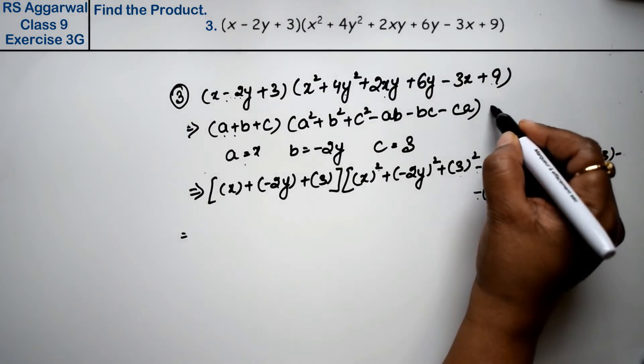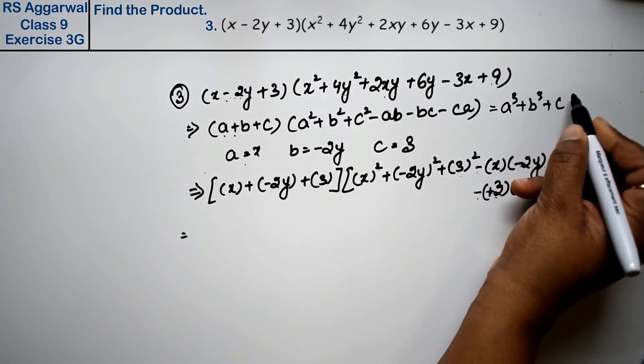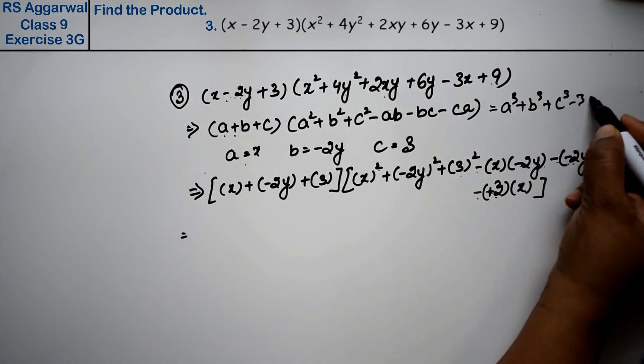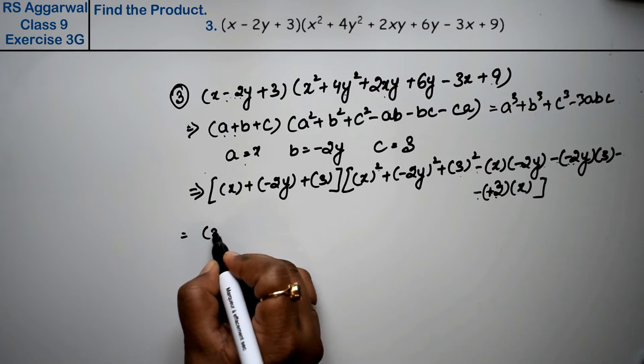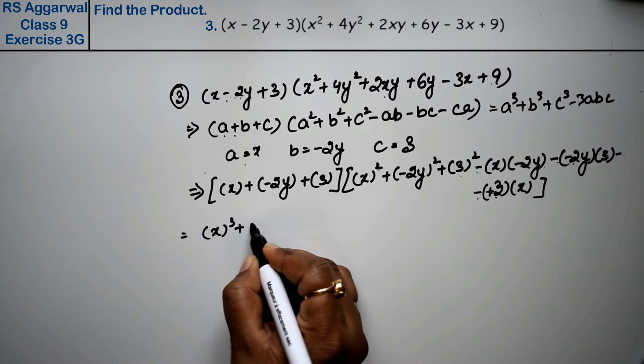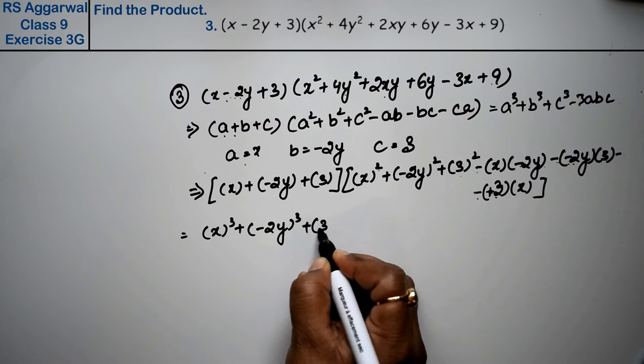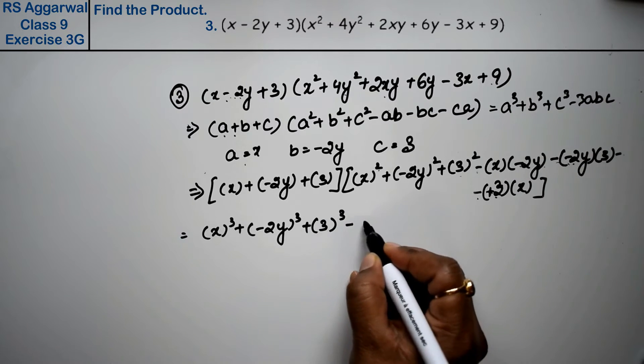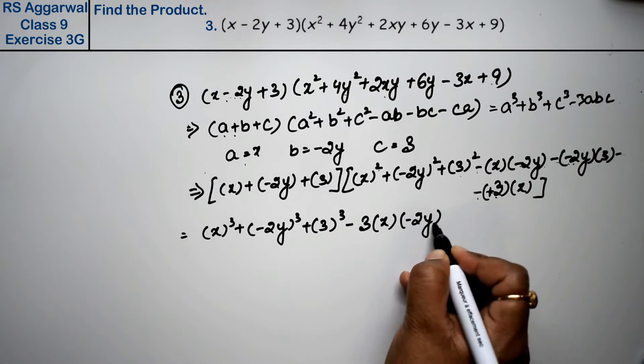This formula was a³ + b³ + c³ - 3abc. So a³ is x³, b³ is (-2y)³, c³ is 3³, minus 3abc.